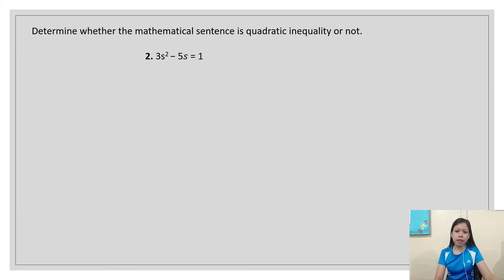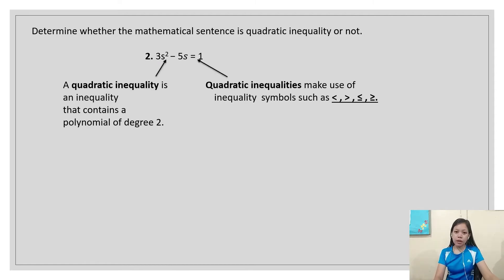So we have another example: 3s² - 5s = 1. The degree is 2. Let's find out if it uses quadratic inequality symbols — less than, greater than, less than or equal, and greater than or equal. The symbol for this equation is equal, so this means that the equation is not a quadratic inequality.